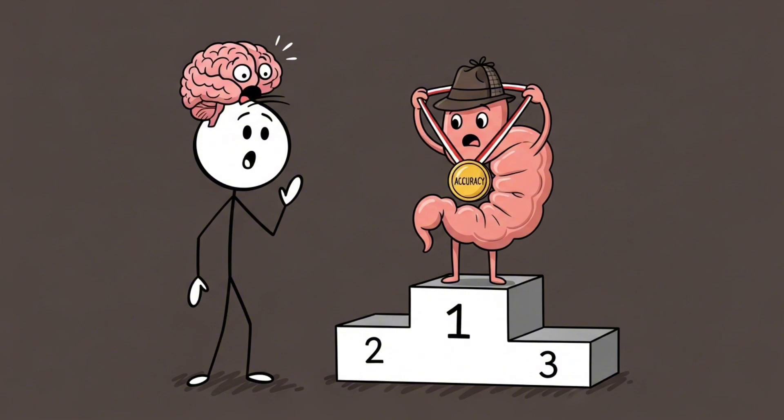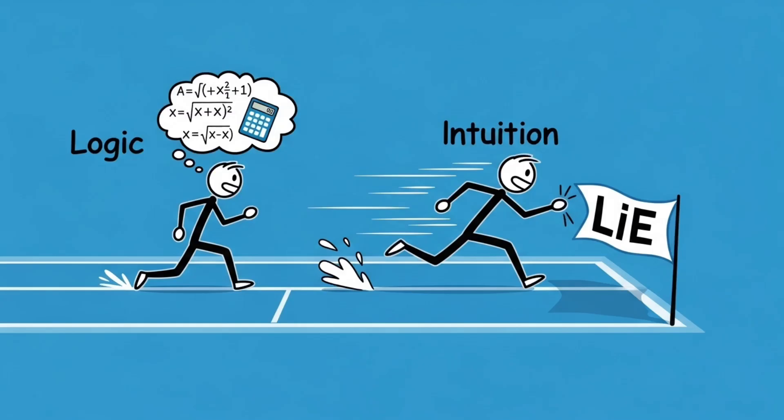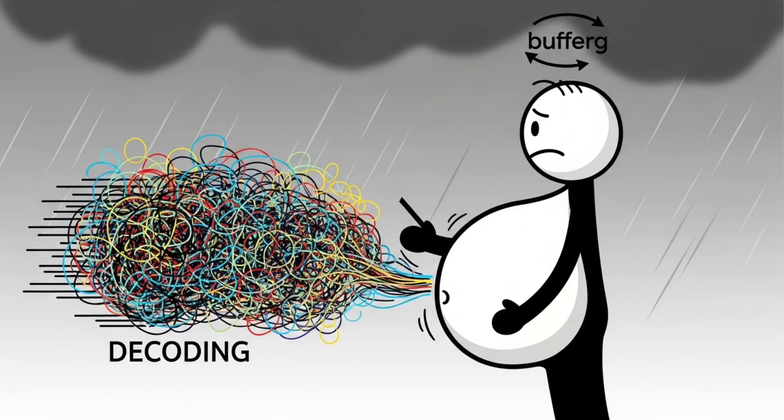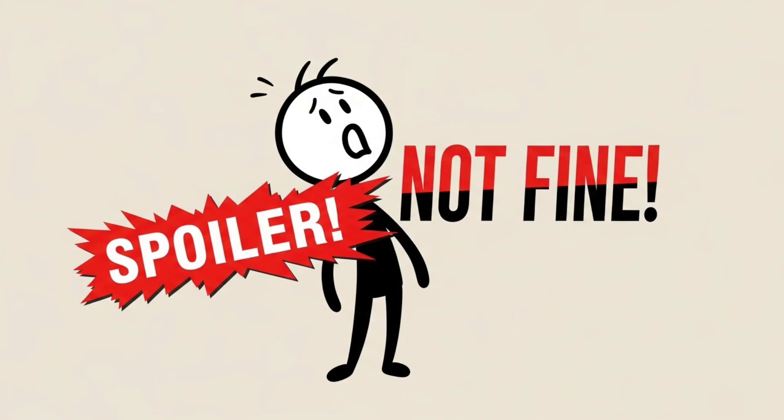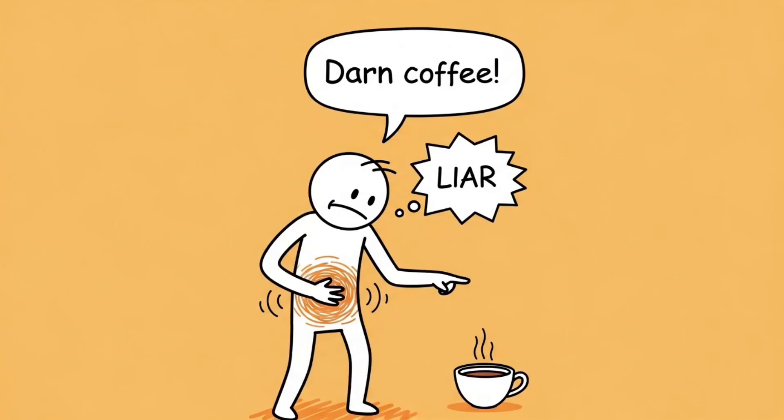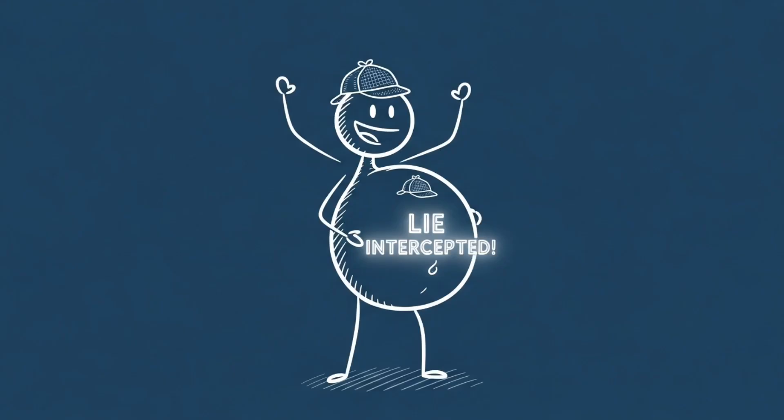This is why your gut instincts are often more accurate than you think. Studies have shown that people who rely on intuition instead of logic catch lies faster. Your gut is decoding social tension and emotional shifts before your brain finishes buffering the last sentence. Basically, your stomach knows you're being lied to, but your brain, being the drama queen it is, dismisses the signal like, relax, we're fine. Spoiler, we're not fine. So next time you feel that subtle gut twist, don't blame the coffee, blame the lie your body just intercepted.